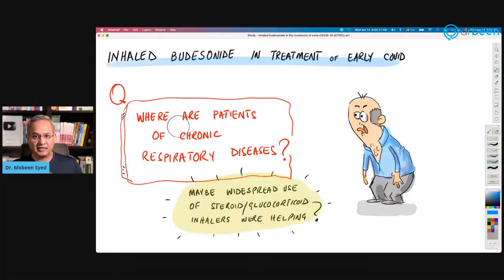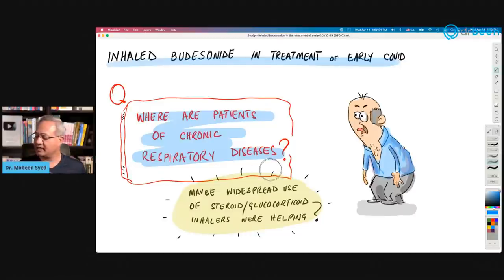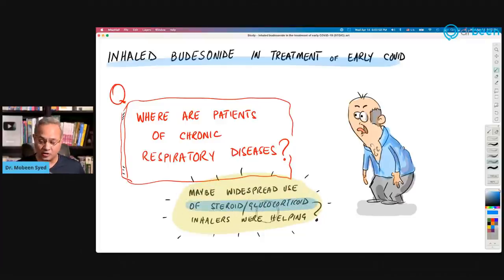The author said that they wondered when they were treating patients, they are doctors, when they are treating patients, they wondered where are the patients of chronic respiratory disease? So they saw in their patients cohort that were coming to their clinics or hospitals that the patients of chronic respiratory diseases were less amongst those who are presenting with COVID. And they became very surprised because you would expect them to be actually more. They already have a chronic respiratory disease. And they found out and they thought, they postulated maybe widespread use of steroids, glucocorticoids, inhalers were helping these patients.